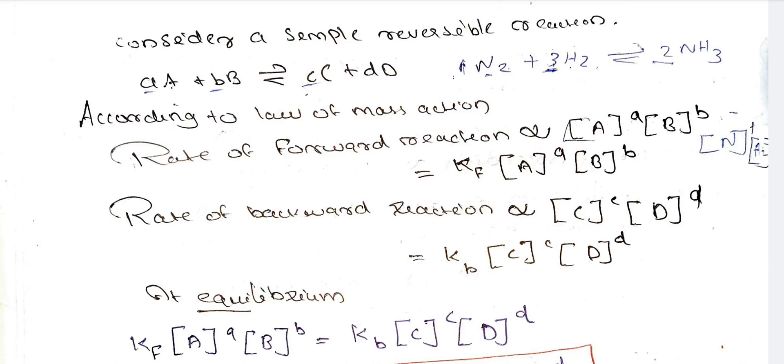Now, considering the example with 3H2, if H2 is B, then according to the Law of Mass Action, the rate of the forward reaction is directly proportional to the product of the molar concentrations of the reactants A and B. We write the concentrations in square brackets, such as [A] and [B] raised to their stoichiometric coefficients.